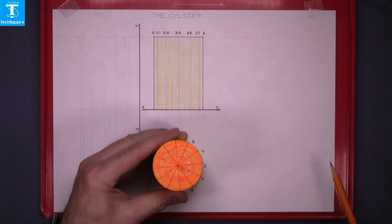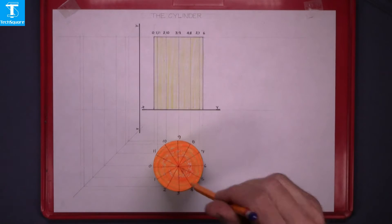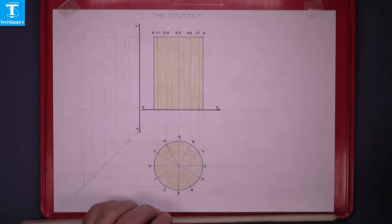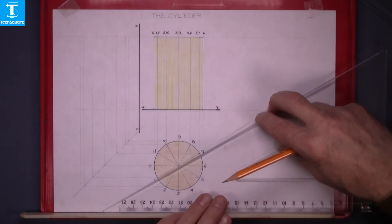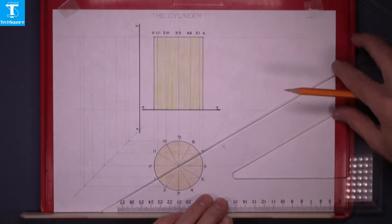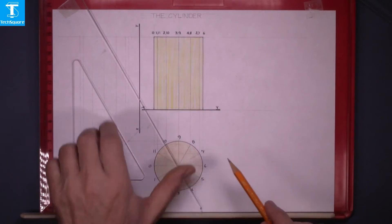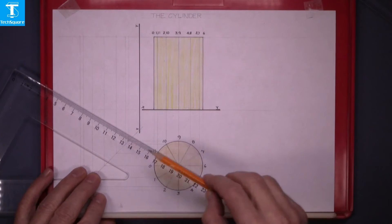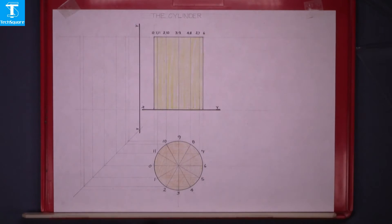Now this is the drawing of it. So now the plan of it is looking directly down on top of it. We see this circle here. I have divided it up into 12 equal parts. So this is it here and divided up into 12 parts, we just use the 60 degree set square.